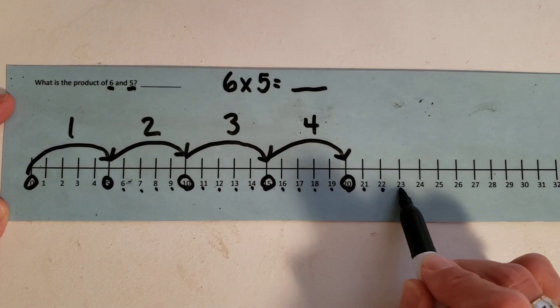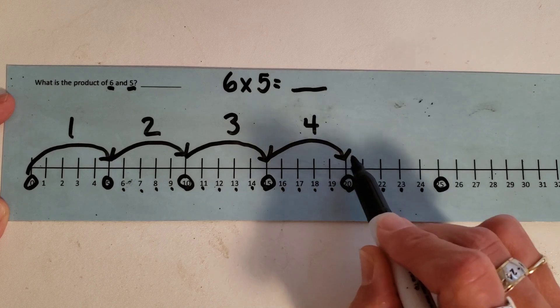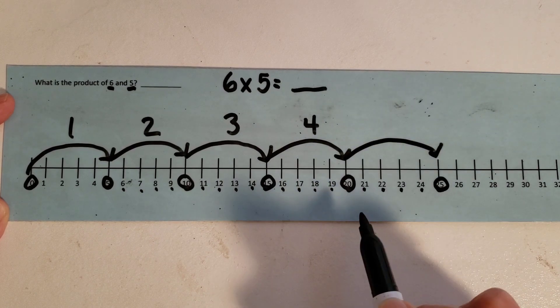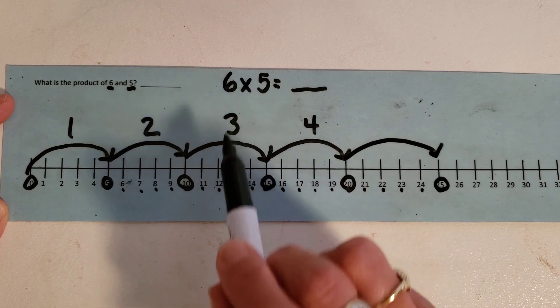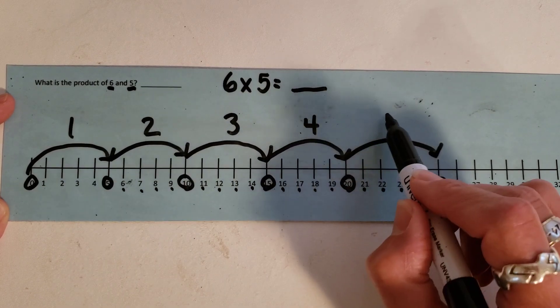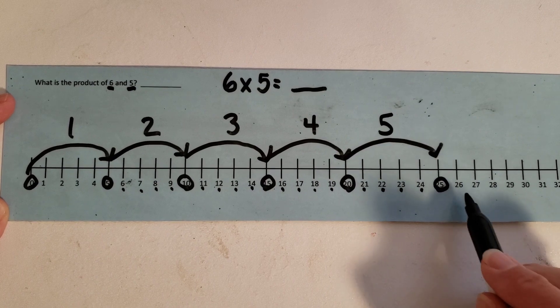So one, two, three, four, five. This is my fifth group. All right, and we're doing six groups of five is what we're doing. So I've got, this is my fifth group and so I'm hopping over. I need one more group.